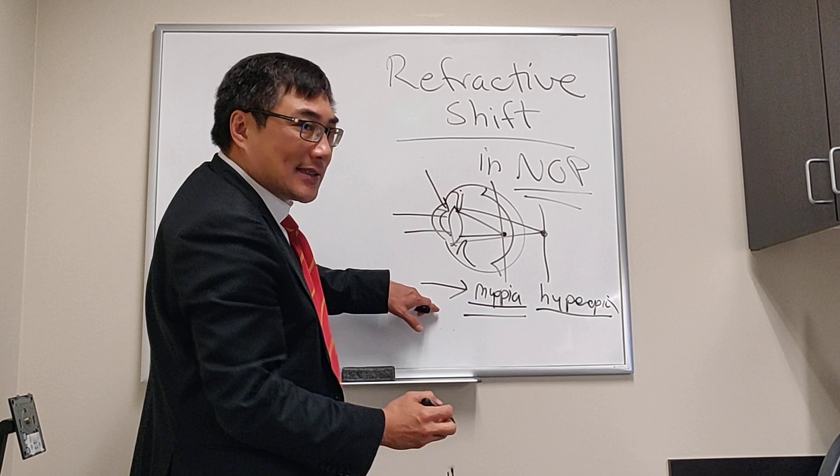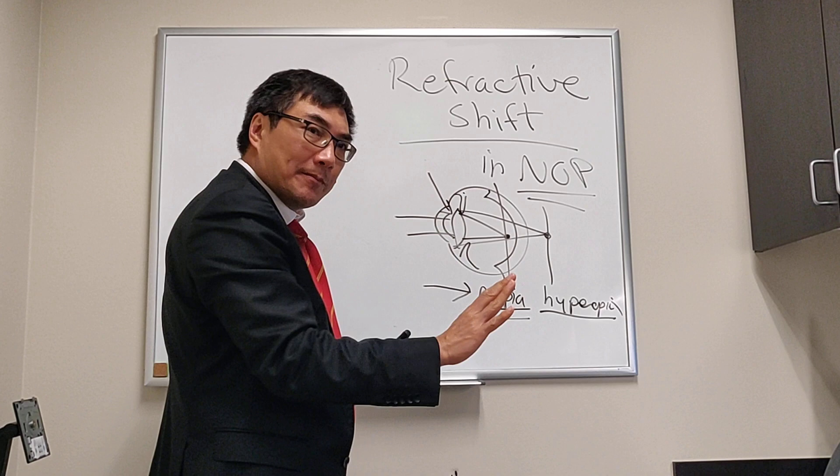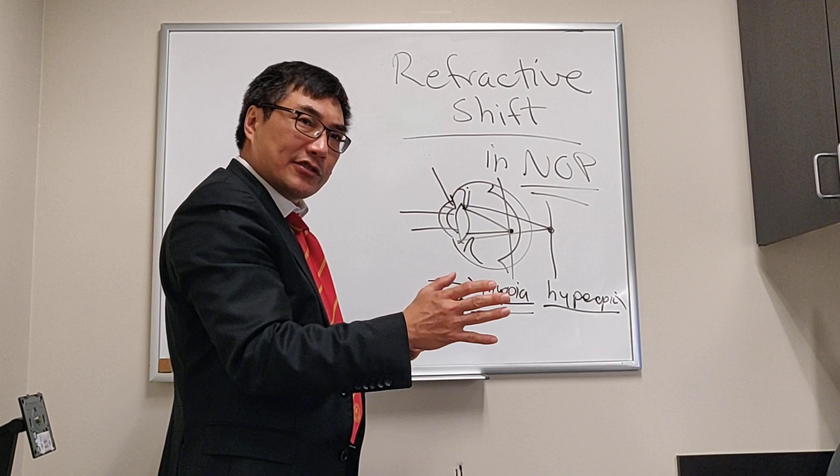In the posterior segment, a hyperopic shift is caused by the retina moving forward, usually from subretinal fluid. In neuro-ophthalmology, the classic cause is steroids leading to central serous retinopathy, but anything that causes a serous detachment can produce this hyperopic shift.